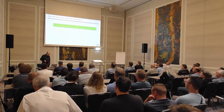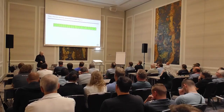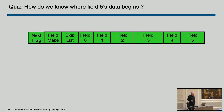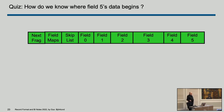How do we know where field five's data begins? You start at the beginning, look at the first length field, move ahead that many bytes, look at the length field there, move ahead that many bytes, until you get to field five. If you had 100 fields, that might take a little longer, which is why we have the skip table. Machines are much faster than they were when that mechanism was designed, but it's still there and still useful.